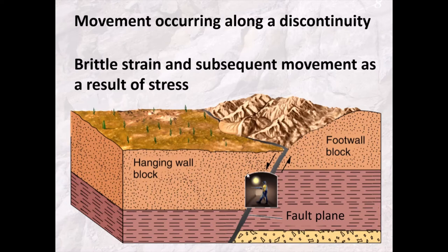So that's how faults form, and those are the terms we use to distinguish different parts of the fault: the fault plane, the footwall block, and the hanging wall block. Whenever you're looking at a fault in cross-section, I'd recommend just drawing one of these mine shafts to help you identify which is the footwall block and which is the hanging wall block.